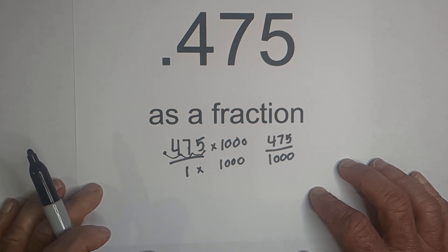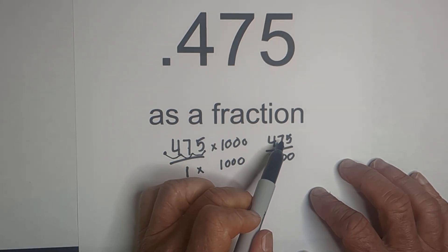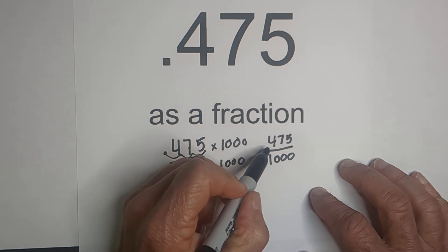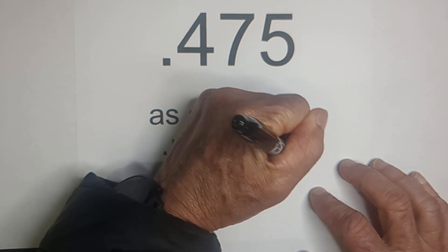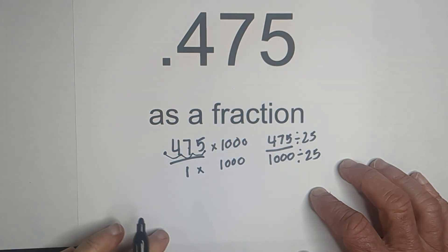Now all I do is reduce the fraction. Since this ends in 75, I know that 475 is divisible by 25 and so is 1,000.